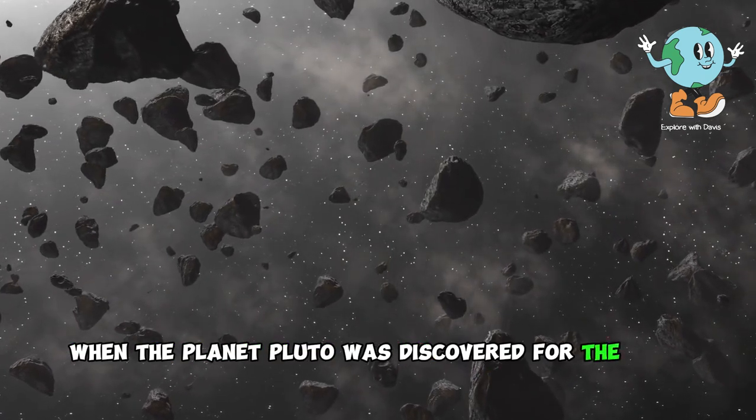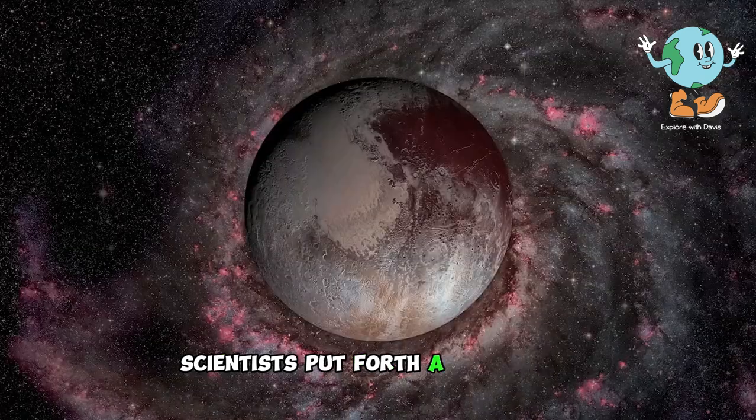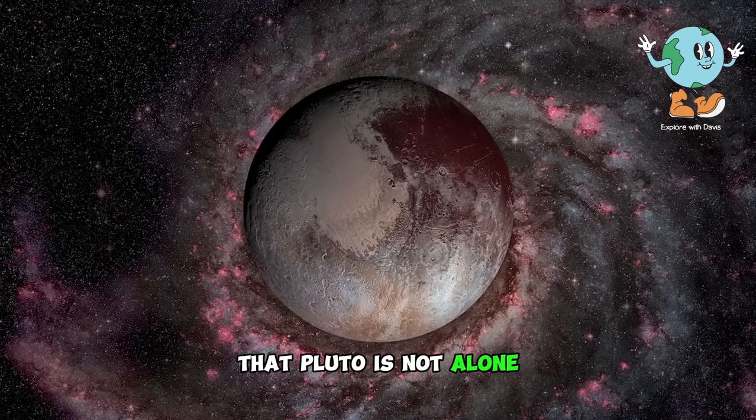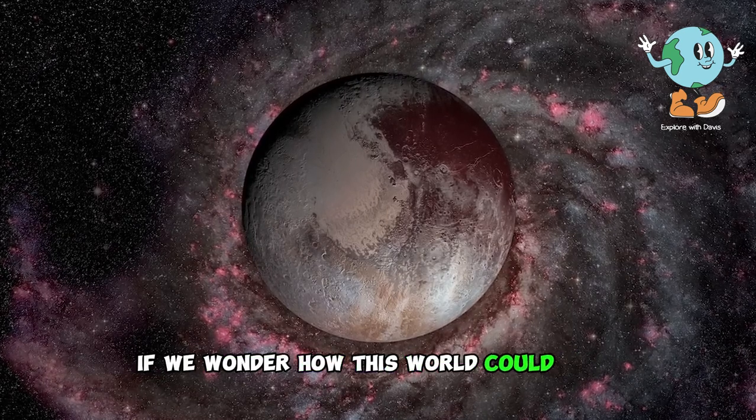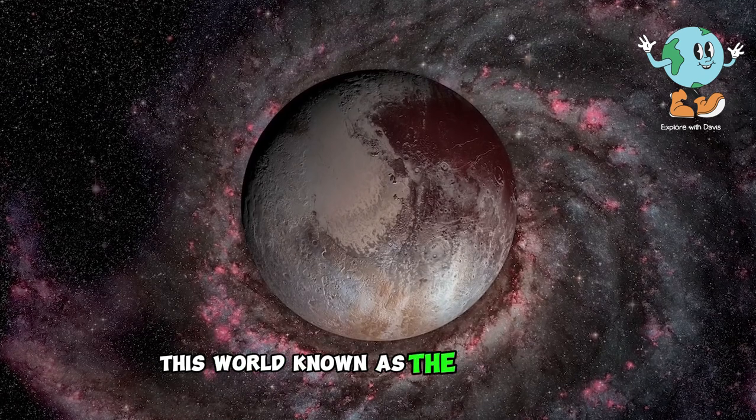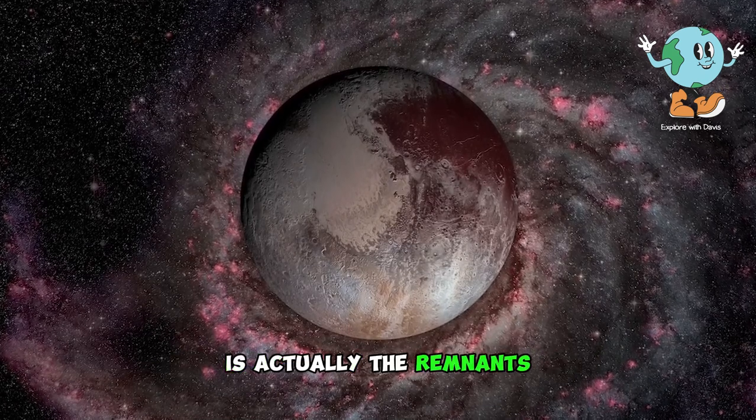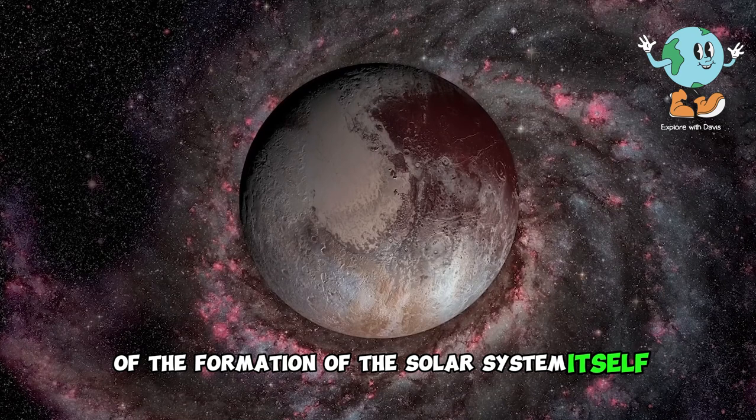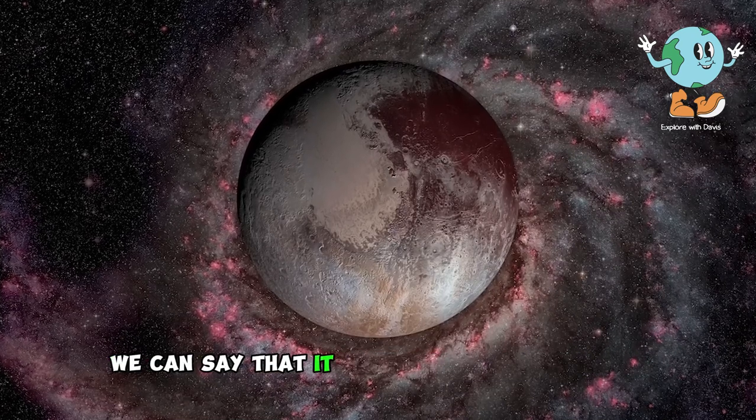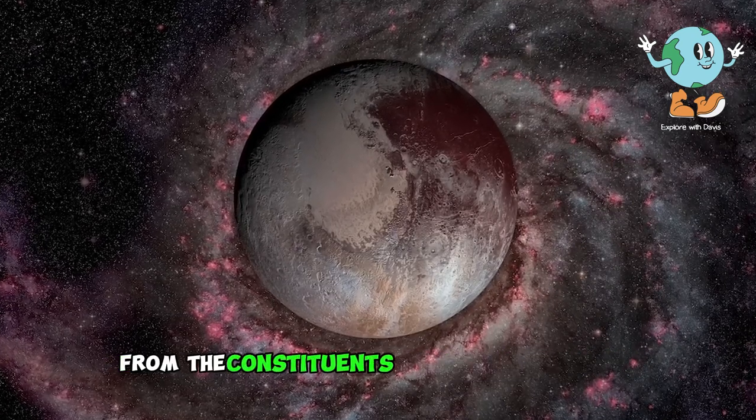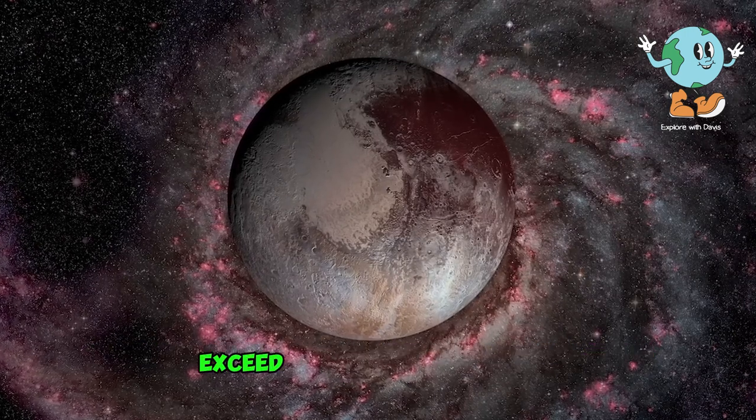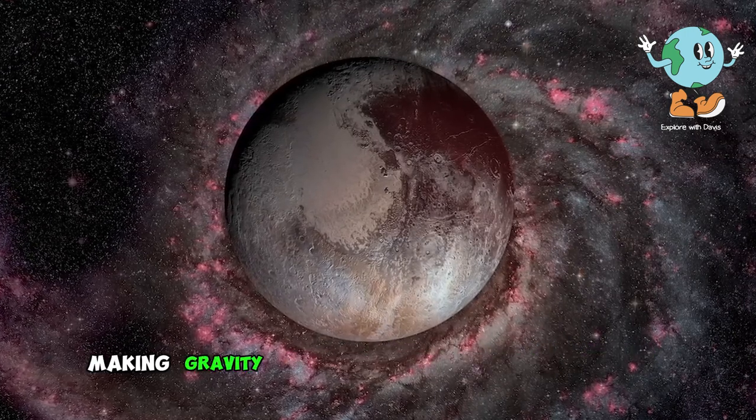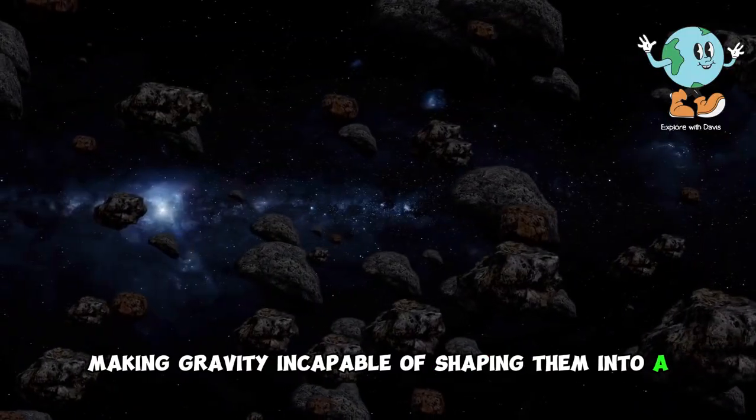When the planet Pluto was discovered for the first time, scientists put forth the hypothesis that Pluto is not alone but rather a member of another celestial world. This world, known as the Kuiper Belt, is actually the remnants of the formation of the solar system itself. In other words, we can say that it is the leftover materials from the constituents of the solar system. These remnants are spread out over distances that can exceed millions of kilometers, making gravity incapable of shaping them into a complete planet.